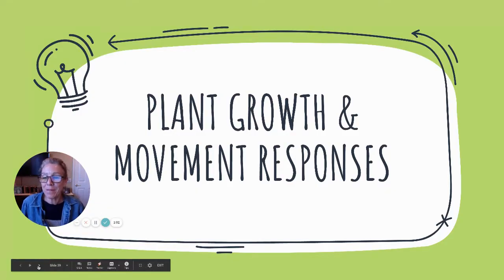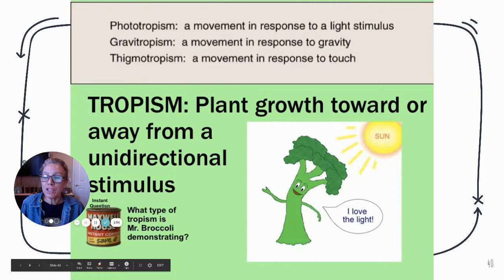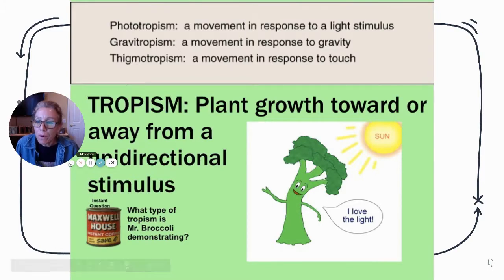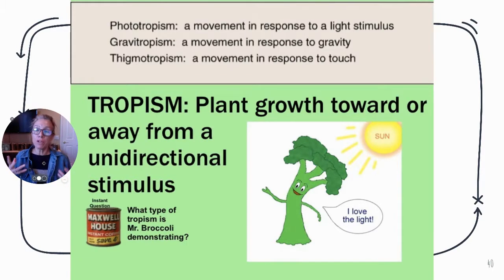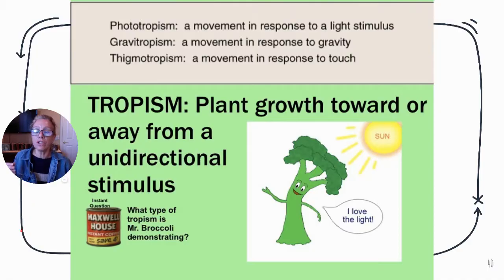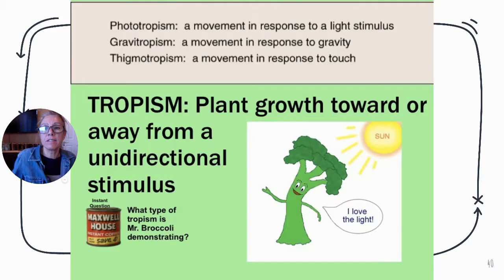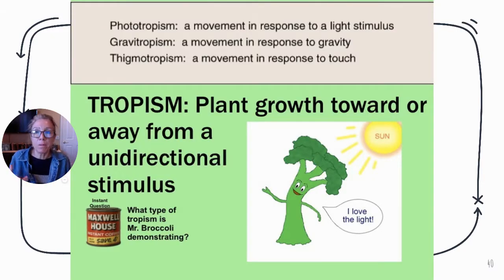I encourage you to have watched video one first, as it gives a better understanding of what we'll talk about today. So first, we talked about phototropism and primarily about auxin and its role. Phototropism is when a plant grows towards the light in response to light. Gravitropism is a response to gravity and thigmotropism is a response to touch.